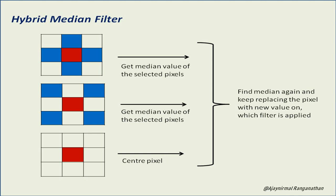For the plus symbol we get the median values of the selected pixels. Then for the x symbol pattern we get the median values of that selected set. And then we have the center pixel — the original pixel — where we collect these values.